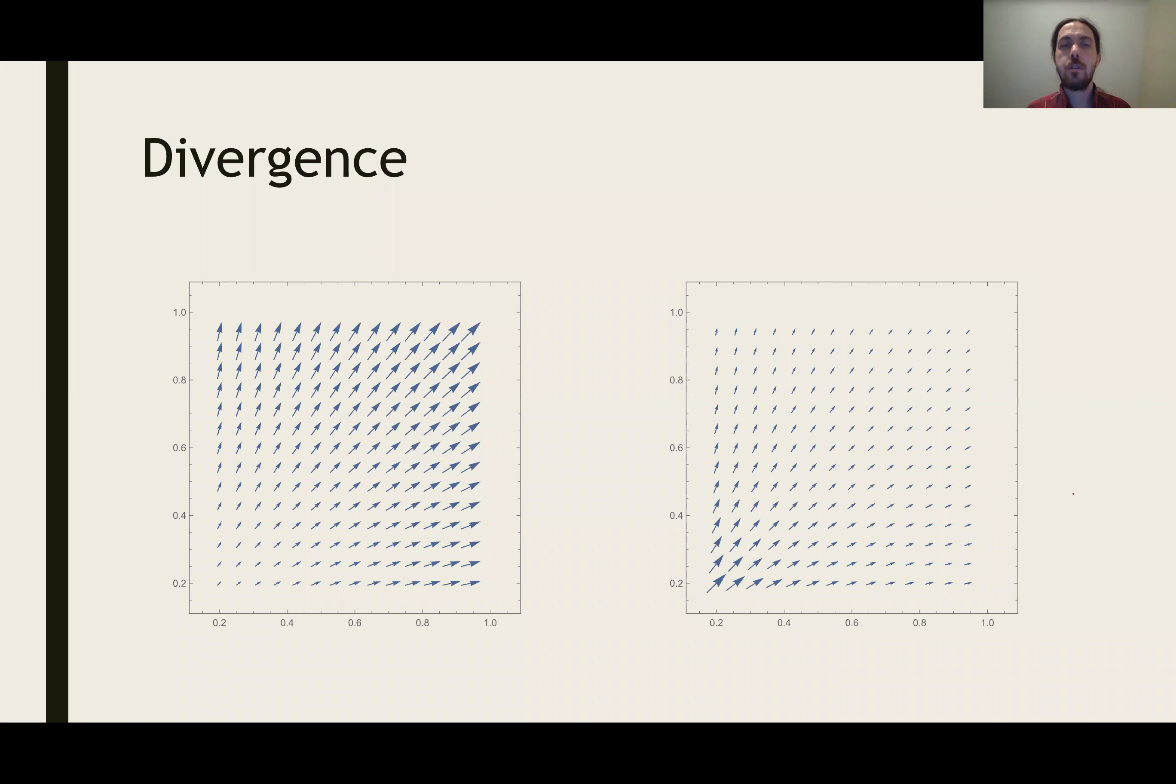So here are two pictures of divergence, or two pictures of vector fields that are going to have different divergence. So in this one, the vector field is going to have positive divergence. And in this one, the vector field is going to have negative divergence.